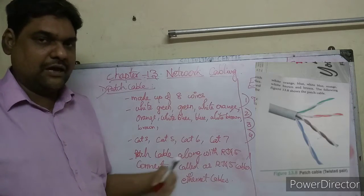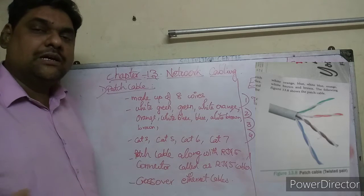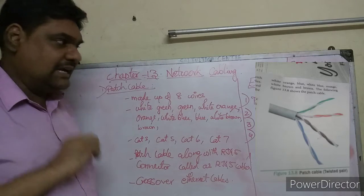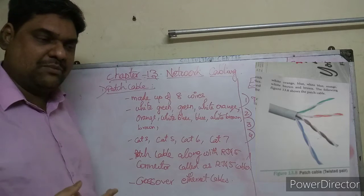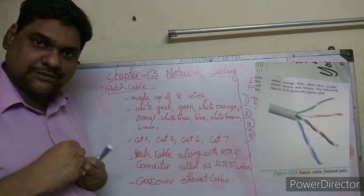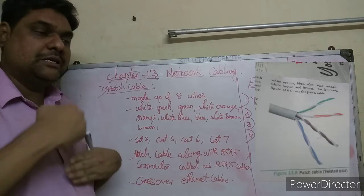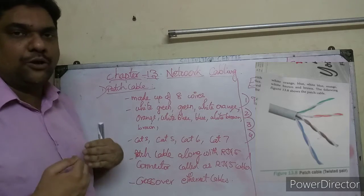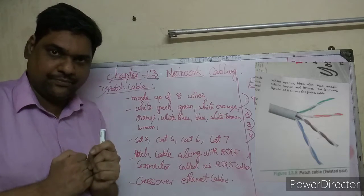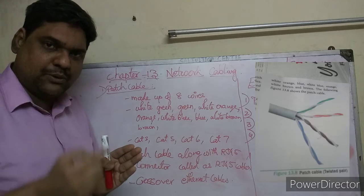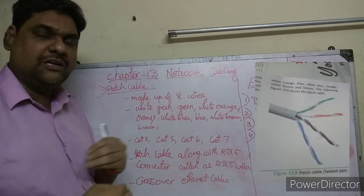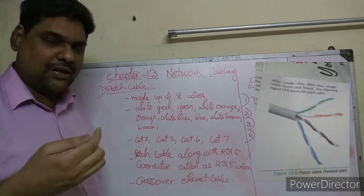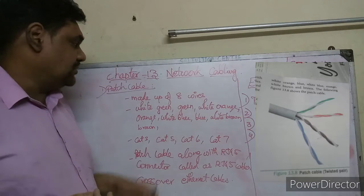The patch cable has yellow color or gray color wires inside. That is why it is called a patch cable - it is made so that one end connects to the other side. The image is arranged in a unique way in the cable, and that is why it is called a patch cable.